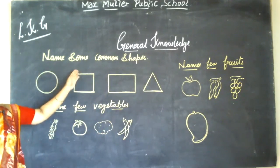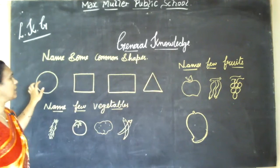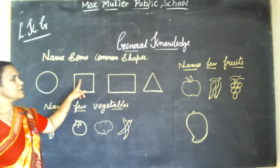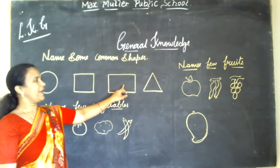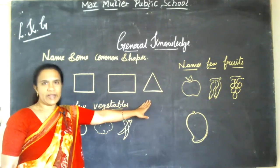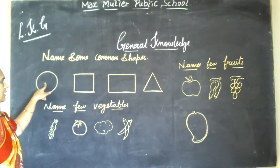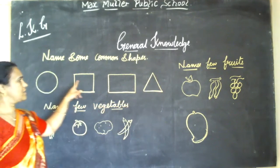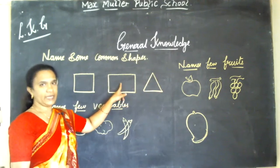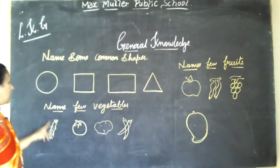Name some common shapes. Circle. Square. Rectangle. Triangle. Circle. Square. Rectangle. Triangle.